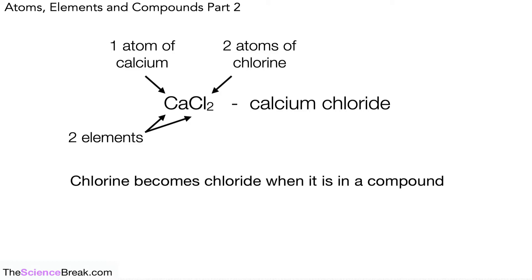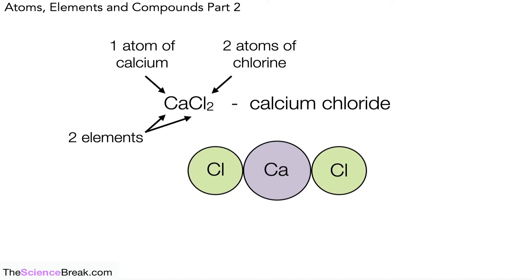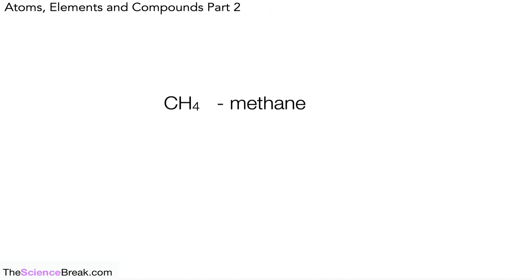Remember that the word 'chlorine' becomes 'chloride' when it's in a compound — that's why it's called calcium chloride. If we draw out the structure of calcium chloride, we can see that for every one calcium atom there are two chlorine atoms, which is why we write it as CaCl₂.